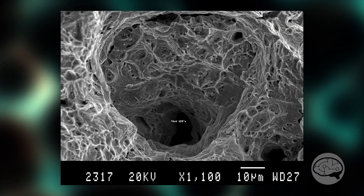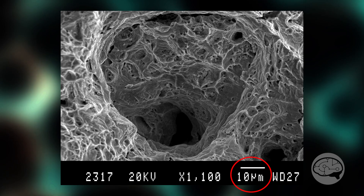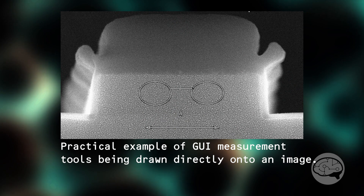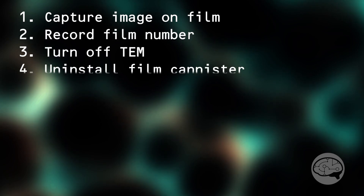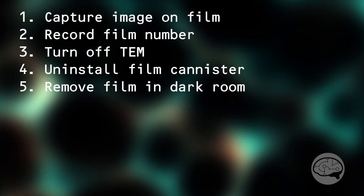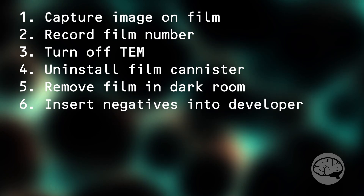On modern digital TEMs you'll have a magnification marker on the screen as well as measurement tools you can draw on your computer screen. However, in these pre-digital days, in order to get a measurement of something, this is what you'd have to do: take an image on film, write down the film number so you know which image was yours, turn off the TEM, take the film canister out of the bottom of the TEM, and in a pitch-black dark room remove the exact number of pieces of film that you exposed and put them in the developer. Then you'll have your little TEM negative.